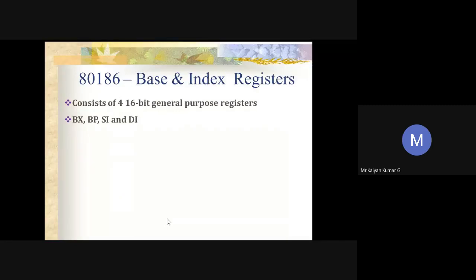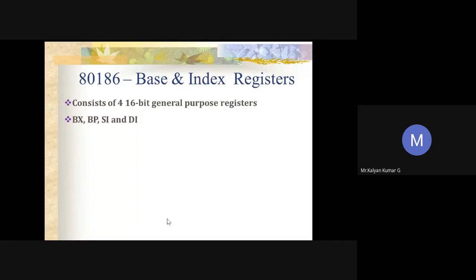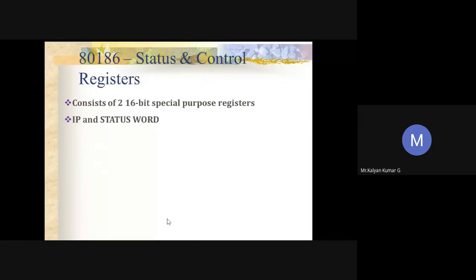Moving on to base and index registers: we have four general-purpose registers — BX, BP, SI, and DI index registers. These are used to determine the offset address of operands in memory. They may also contain base addresses or indexes to specific locations within segments. The main purpose is to determine the physical address of memory for any operand in various addressing modes.